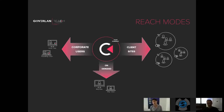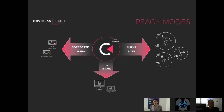The end user reads back a nine-digit number, you type it in, and then you connect to their machine — you grab mouse and keyboard control. The last reach mode is for disparate networks and managed service providers. In this case, you can install the Goverland central server at each one of your client sites, then fully consume Goverland on each client site from your location. You visit one machine at each site, install the Goverland central server, deploy the agents, and have full control from your location across disconnected environments.